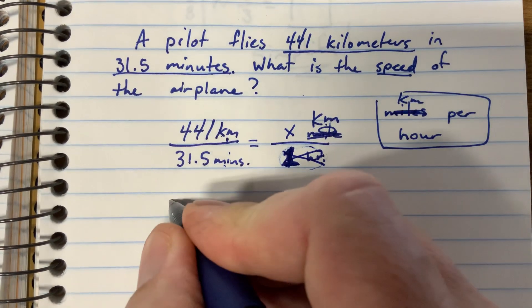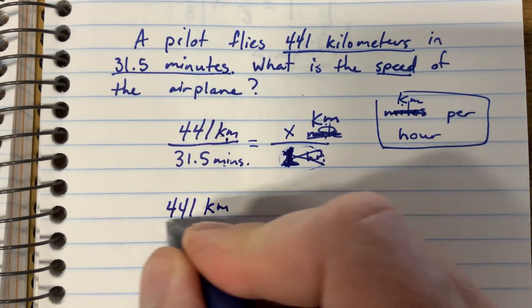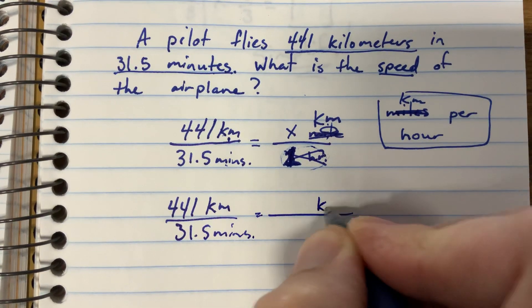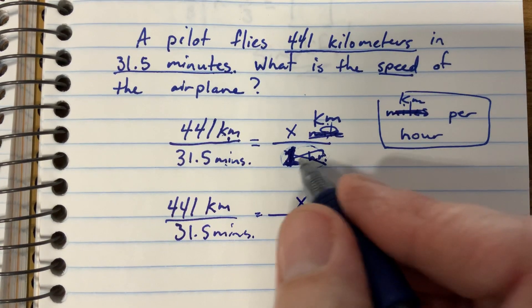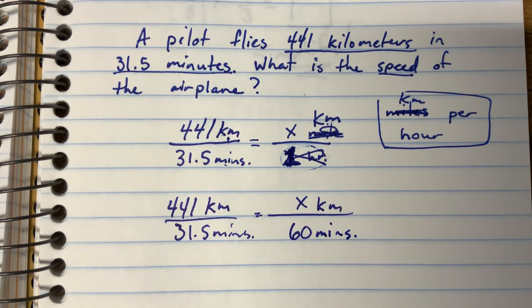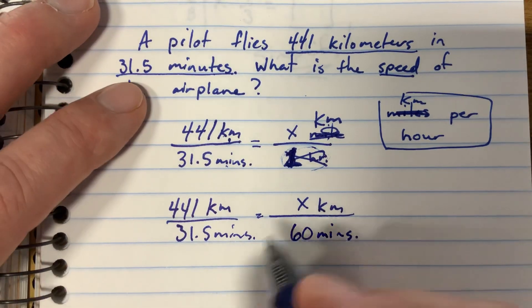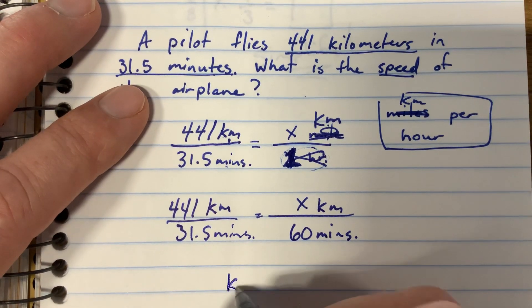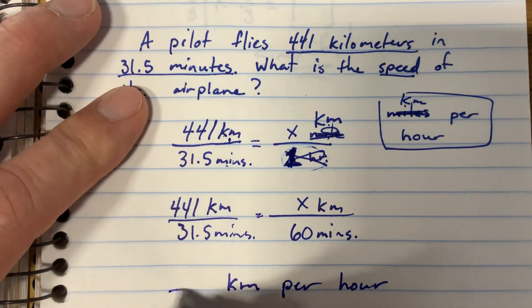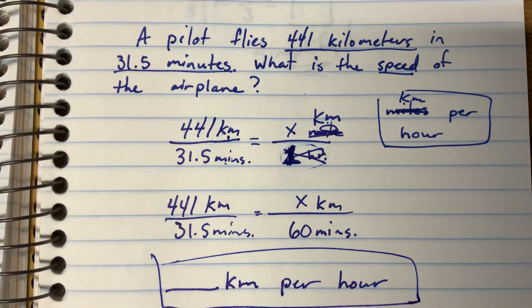Let's rewrite our proportion here. 441 kilometers in 31 and a half minutes. And then our speed is going to be in kilometers per, not one hour, but 60 minutes. Right? So then you can cross multiply and divide. And then your answer should be written in kilometers per hour. So whatever you find here will be how many kilometers per hour that plane flew.